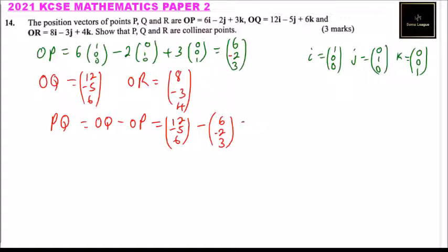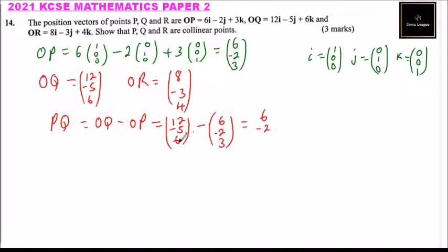Computing the components: 12 minus 6 gives 6, then minus 5 minus (minus 2) gives minus 5 plus 2 which is minus 3, and 6 minus 3 gives 3. So PQ equals (6, -3, 3).